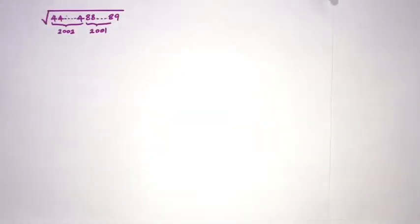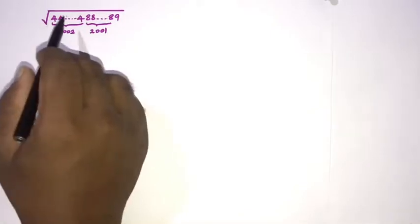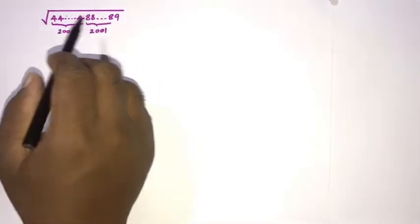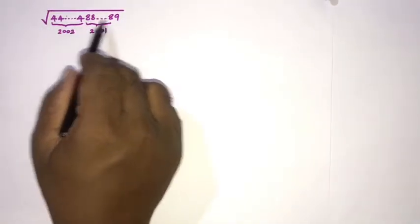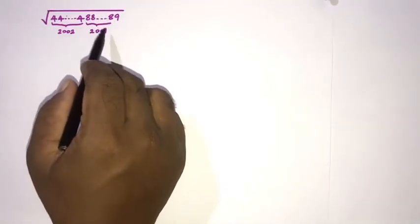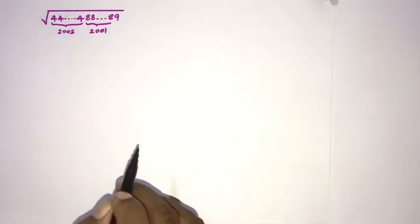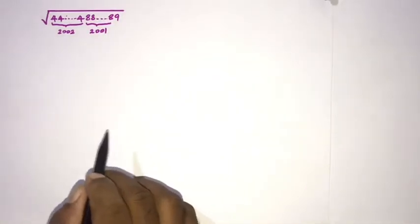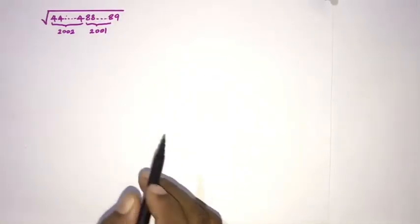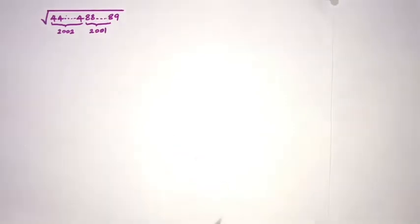Welcome to the Mathematics My Channel. In this video we are going to find the square root of this number: 4 repeated 2002 times, then 8 repeated 2001 times, then 9. This is a training question, not a previous exam question.